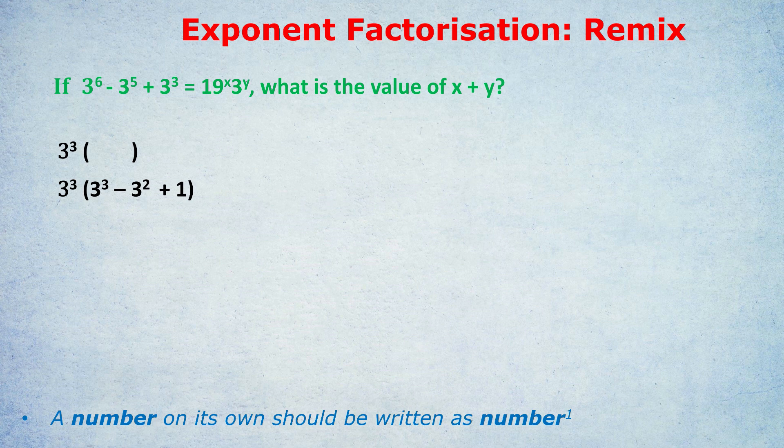The first one would be 3 to the 3, because 3 to the 3 times 3 to the 3 is 3 to the 6. Remember, you're adding up the little numbers when you multiply. And once you get that one right, the others are kind of obvious. It would be takeaway 3 to the 2, because 3 to the 3 times 3 to the 2 is 3 to the 5, plus 1.